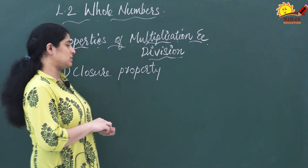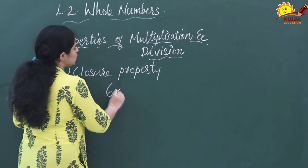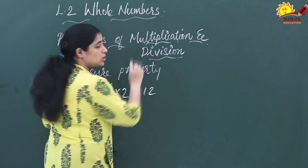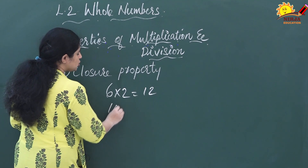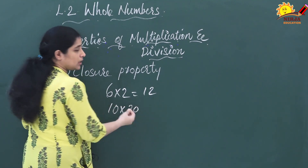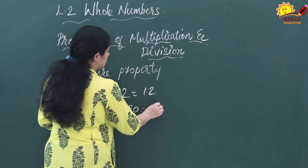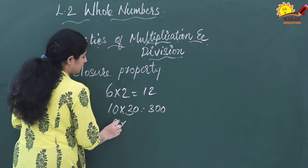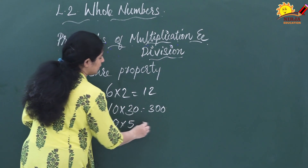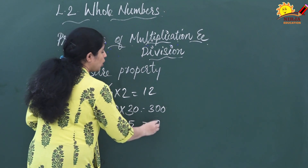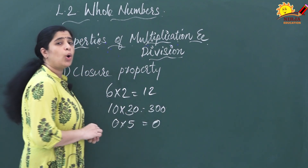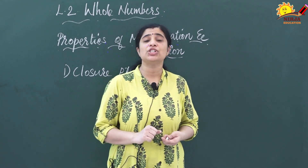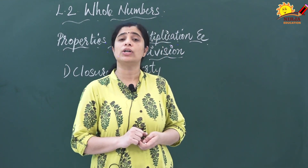I am going to take two whole numbers: 6 and 12. You know that these two are whole numbers, and you are getting 12. Again, 10 and 30 — what we are getting? Yes, 300. Suppose I am taking 0: 0 multiplied by 5 is 0. So all these answers are whole numbers — that means closure property is satisfied. Multiplication satisfies this closure property.